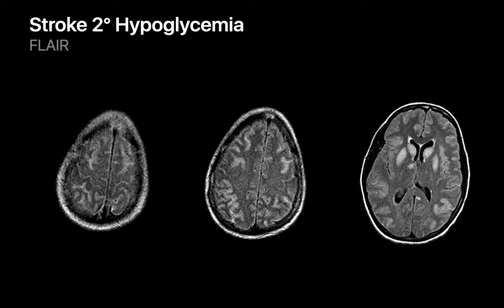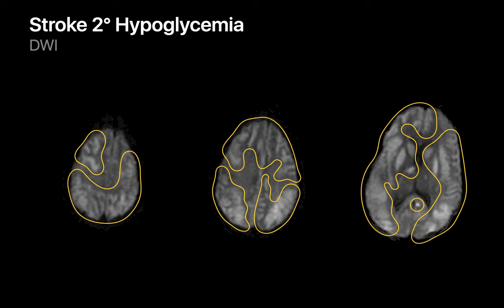Here is another example of a systemic ischemic stroke. However, in this case, the insult was hypoglycemia rather than cardiac pump failure. On these FLAIR images, there are large regions of abnormally increased signal diffusely distributed throughout both hemispheres, including the basal ganglia on both sides. Large regions of increased signal corresponding to acutely infarcted parenchyma are present throughout both hemispheres on the diffusion-weighted images.